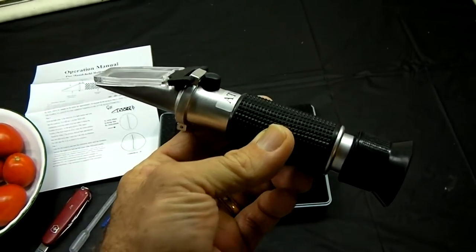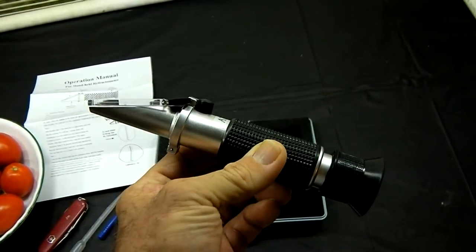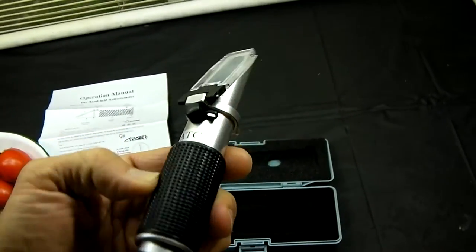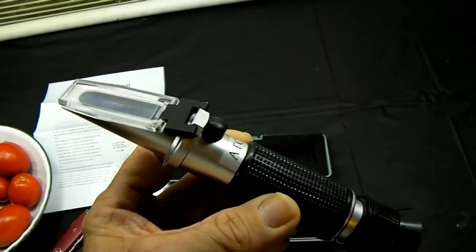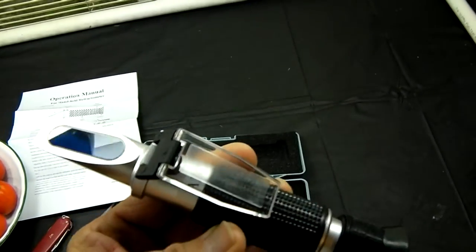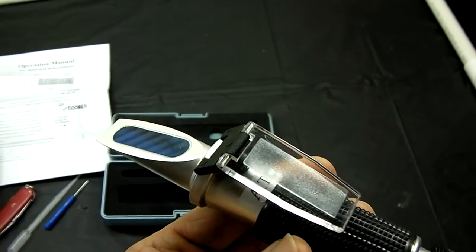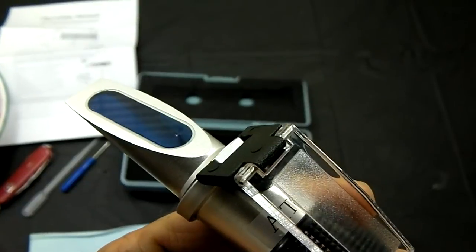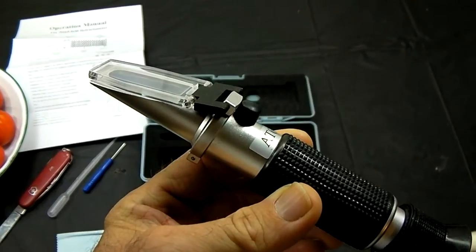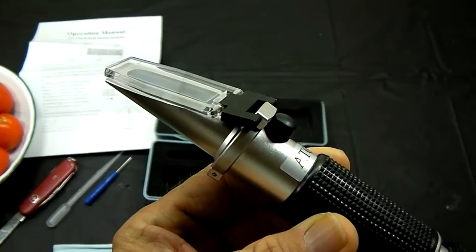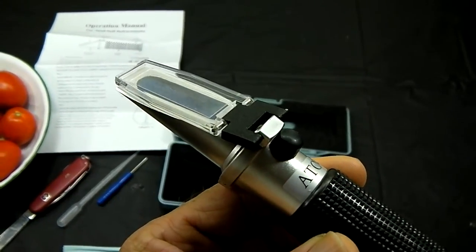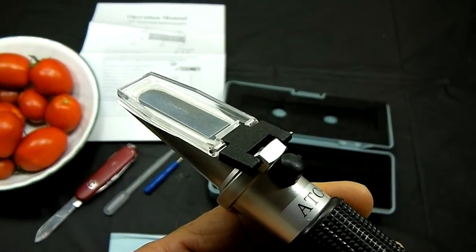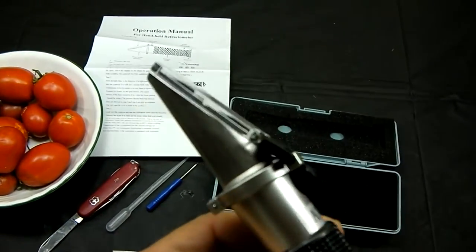This is what a typical Handheld Refractometer looks like. They all look pretty much the same, slightly different in style and construction, but they're all pretty much the same. You can see it's got a little window there. It flops open. You have a glass plate there. That clear plastic cover lets the light in through your sample, and it helps squish down the fluid to make a very thin film on that glass.